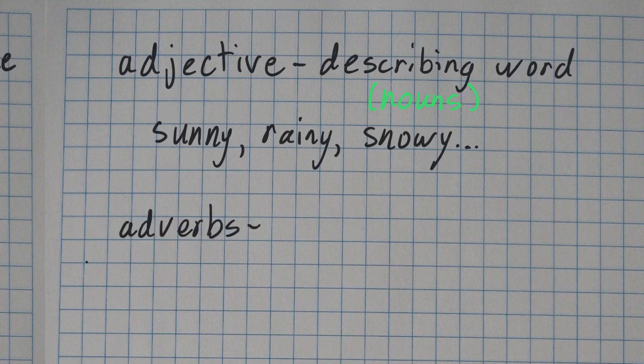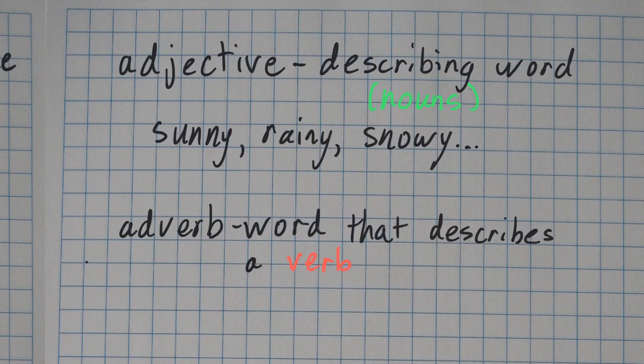Now the definition of an adverb is a little bit bigger, but I'm going to make it simple just for this week. An adverb is a word that describes a verb. So they're describing words too, but they describe verbs. Or it could also describe another adjective or an adverb, but we're just going to focus on this, especially because all of these words this week do exactly this.